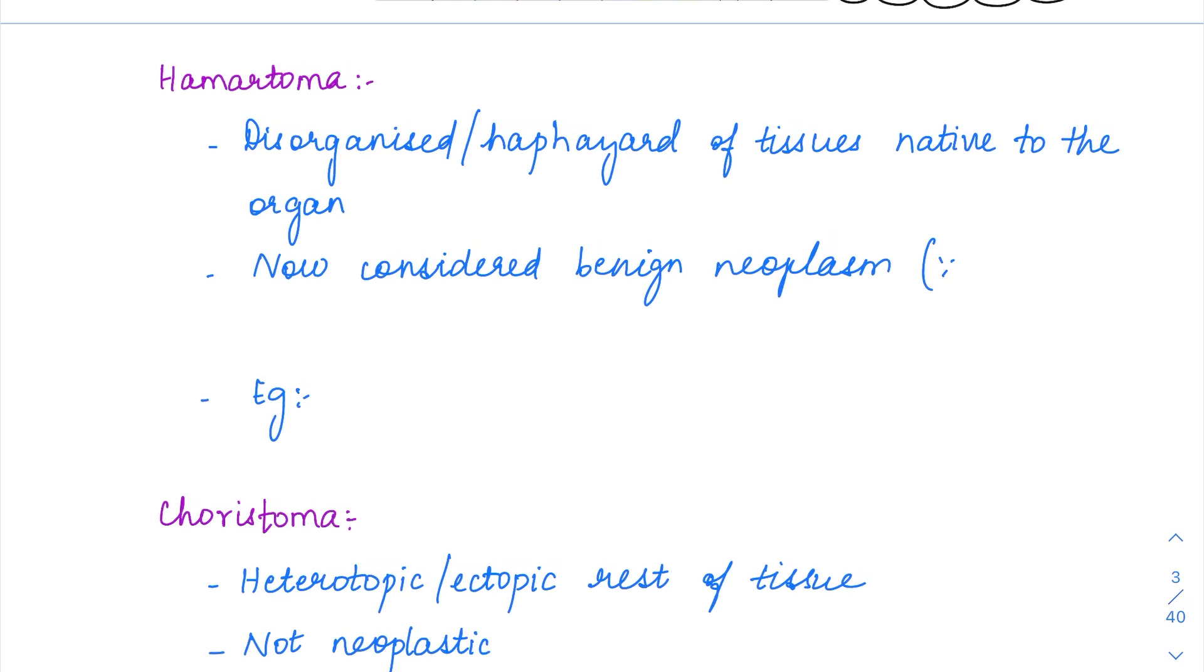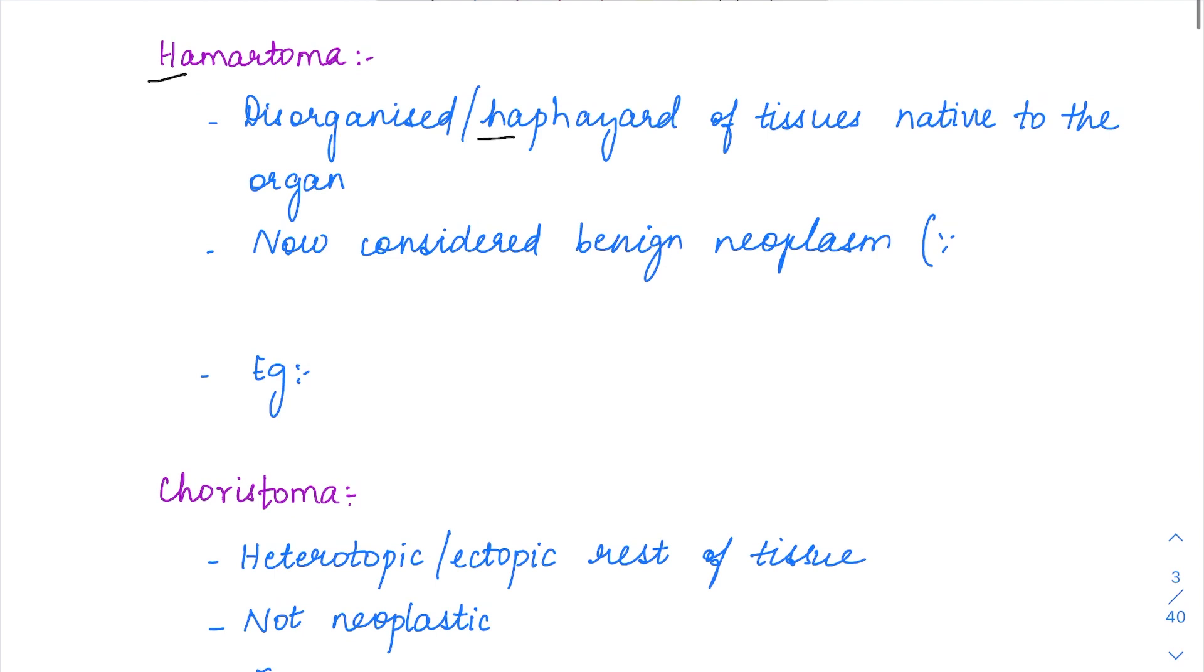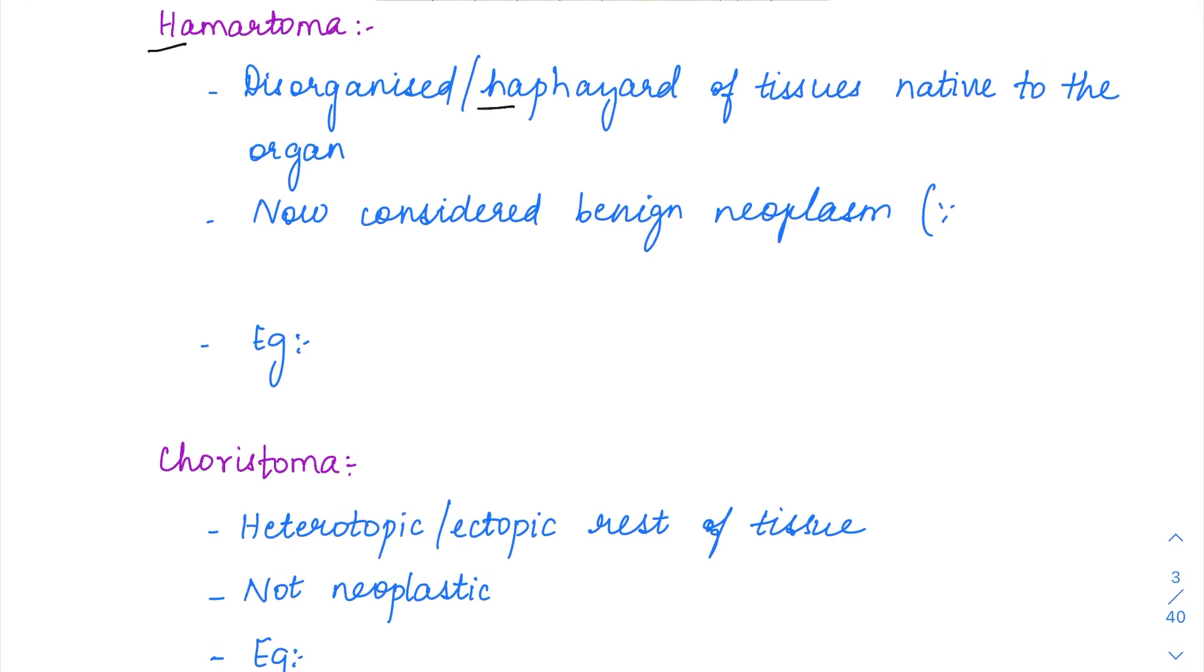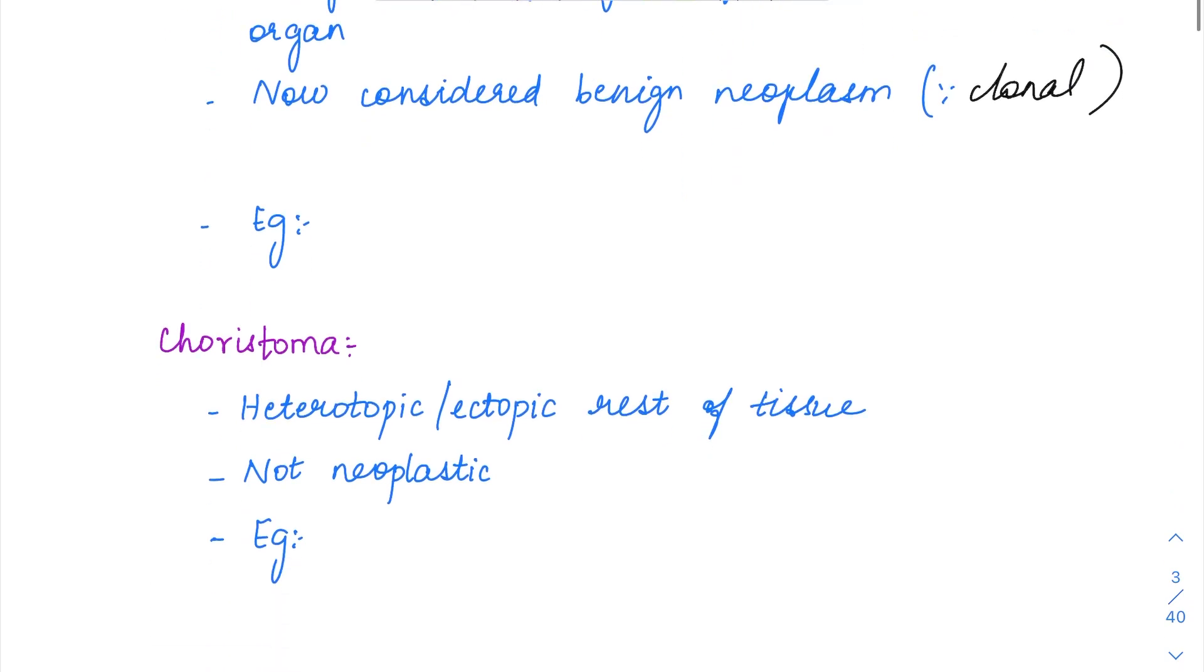Then we see about hamartoma and choristoma. Hamartoma is nothing but H for H. Hamartoma is just haphazard arrangement of a tissue which is native to that organ only. Disorganized arrangement of the tissue which is native to the organ. Previously it was considered as non-neoplastic but now it has been proven that it is having some clonal origin. Some clonal pathogenesis has been found out. It has been considered as a benign neoplasm now. The best example of hamartoma will be a pulmonary hamartoma.